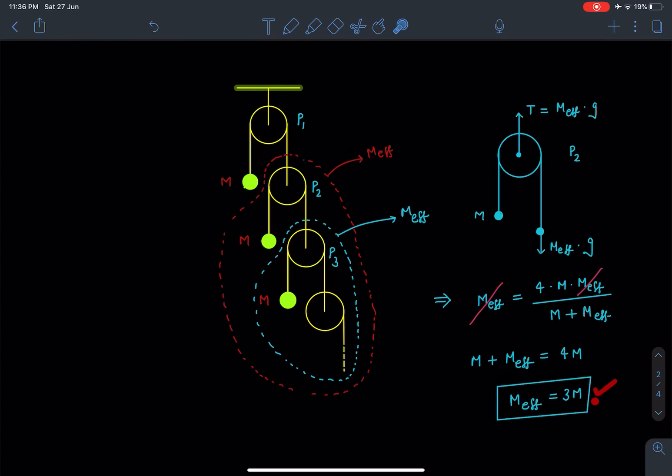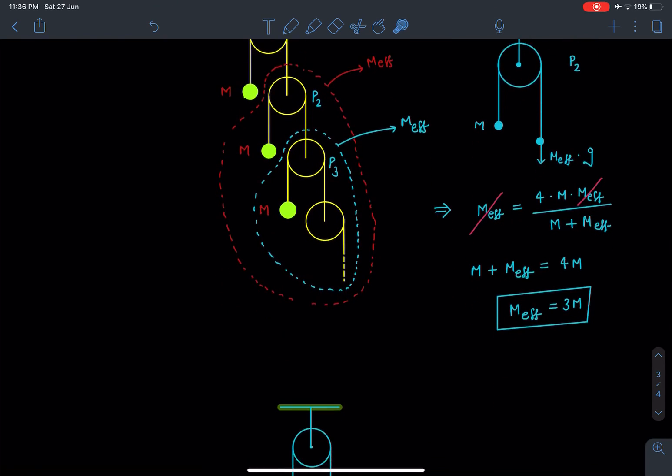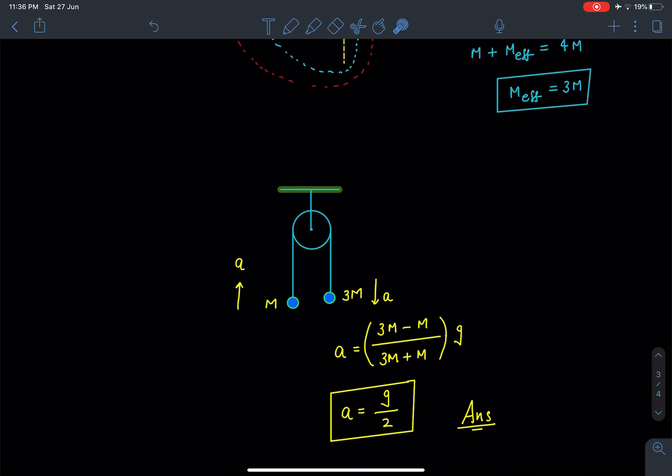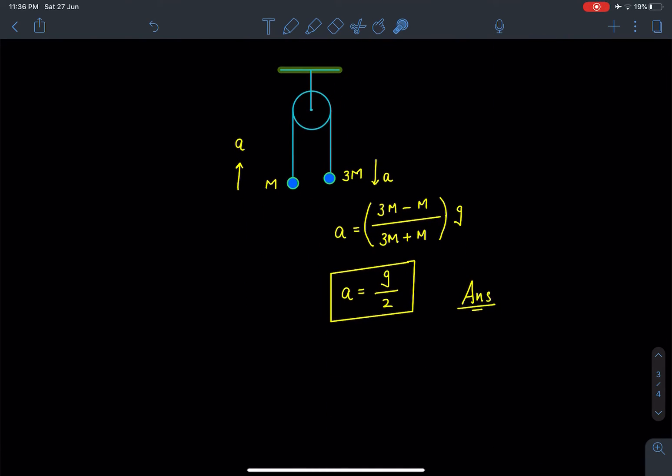From here we get the M_eff value for this system as 3M. This M_eff part reduces the question to a very simple problem where just two masses are present in a pulley: one side this mass M is present and the entire assembly up to infinity has been replaced by mass 3M.